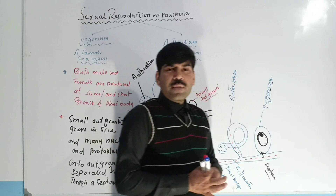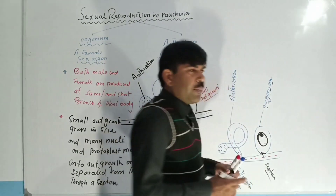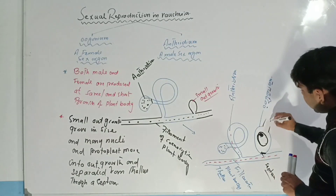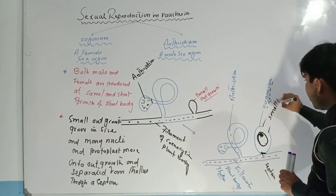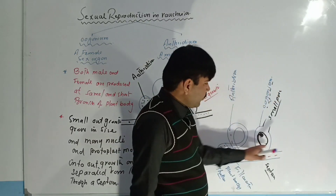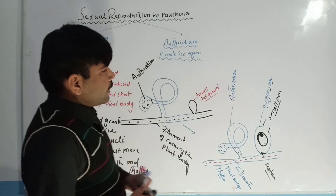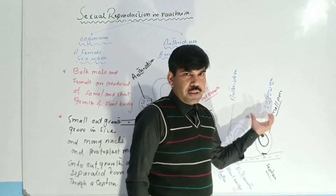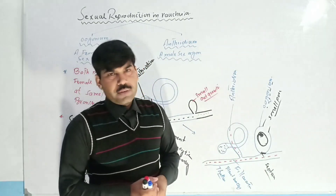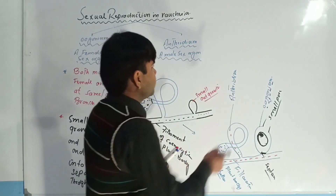When the oogonium becomes mature, the wall of the oogonium develops a small pore. This small pore is formed after maturation of the oogonium, and it will allow antherozytes to enter for fertilization. This is the time of maturation, after which fertilization of the female structure — the oogonium — will occur.